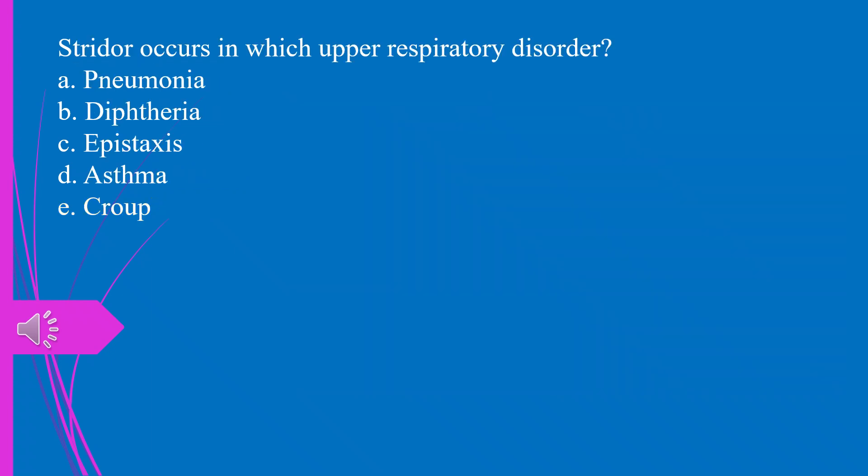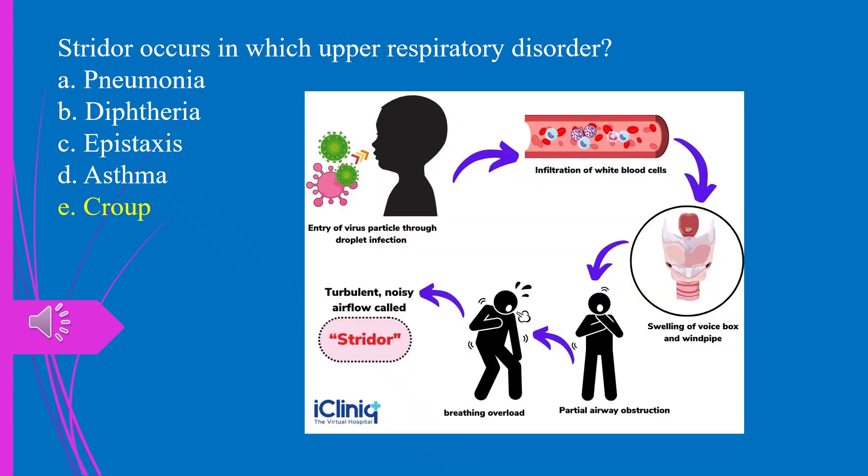Question 36. Stridor occurs in which upper respiratory disorder? a) pneumonia, b) diphtheria, c) epistaxis, d) asthma, e) croup. The answer is e, croup.